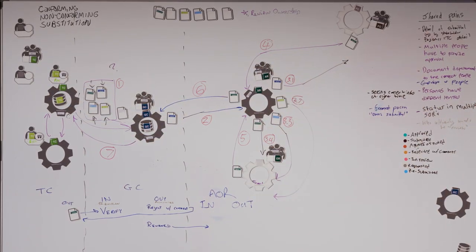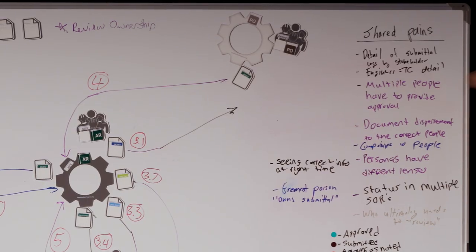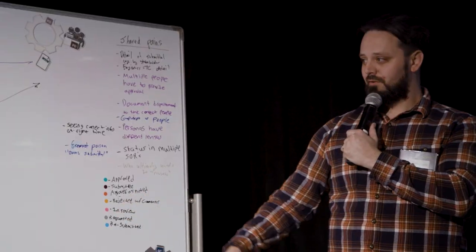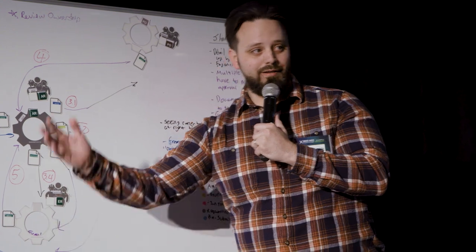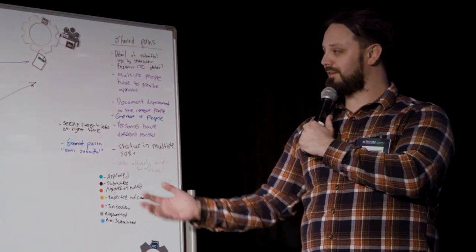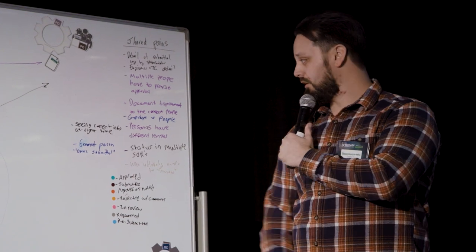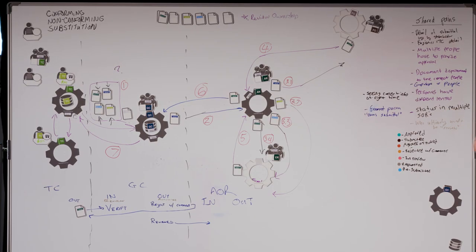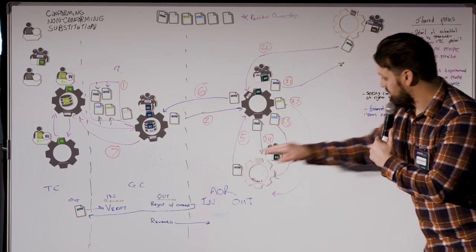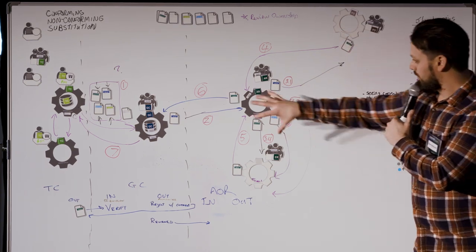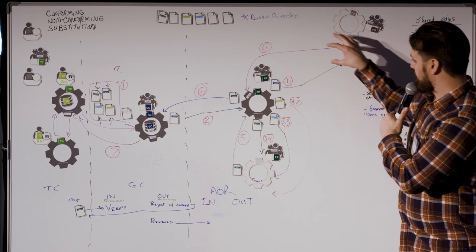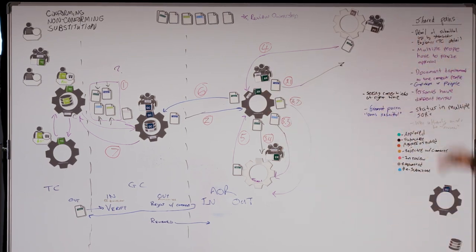Multiple people have to provide approval for one small document. Companies versus people is a big one — turning it into the right person matters. If you think you're submitting to the superintendent but it actually goes to a project engineer on their third day who has no power to approve anything, it may sit in someone's inbox and take a long time. Statuses are another pain: each piece could have a different status, every status has its own system of record, no one has one overall view, and each system of record is likely out of sync with the others.